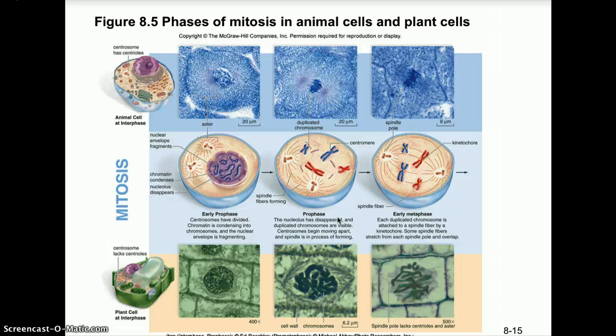Looking at the cell cycle diagram — the same one in your book — we have G1, S, and G2 phases in interphase: G1 is growth, S is DNA replication, G2 is a second period of growth and preparation for division. In early prophase, the centrosomes have divided; in animal cells the centrosomes are regions where centrioles form and the spindle fiber begins to emerge from the centrioles.